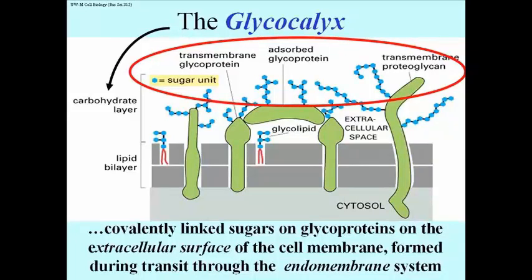And they get these sugars during transit through the endomembrane system, which includes rough endoplasmic reticulum, the cis and trans Golgi vesicles, and secretion vesicles at the end of this pathway.